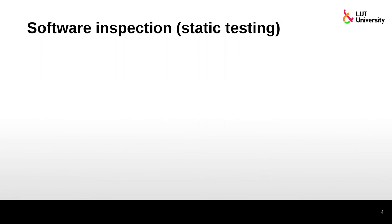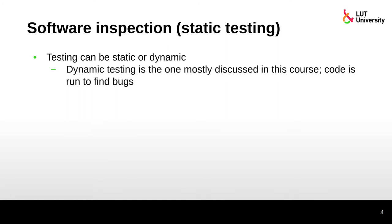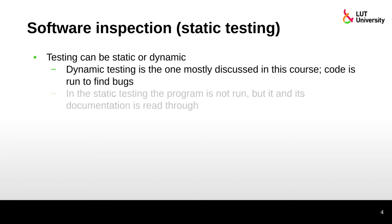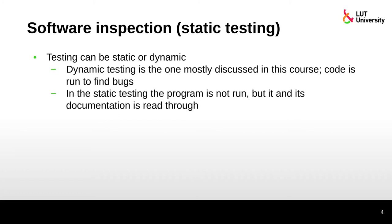There is also the concept of software inspection, also known as static testing. Testing can be static or dynamic. Dynamic testing — mostly discussed in this course — means that code is actually run to find bugs. In static testing, the program is not run; instead, the code and its documentation are read through. You can read source code to spot problematic parts or security holes, and inspect documentation to find irrelevant or overly demanding requirements.